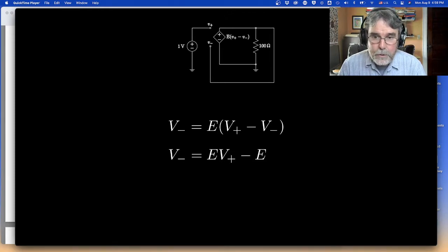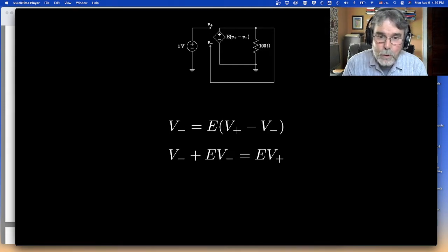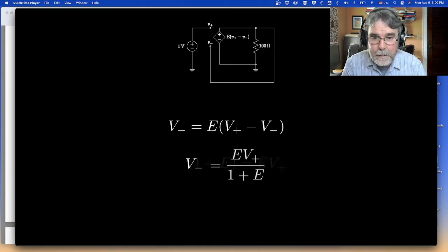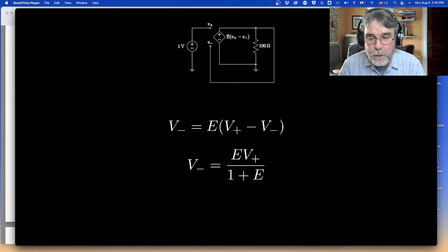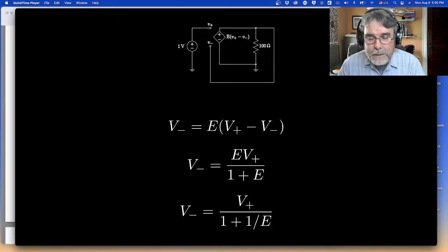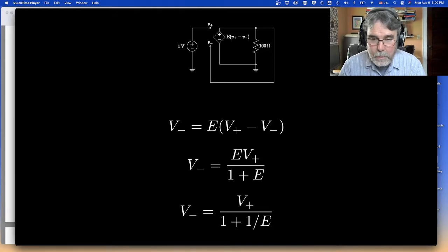Anyway, let's do the algebra. So we'll distribute the E. So now we get E times V plus minus E times V minus. Then the E times V minus moves over. We can factor out the V minus here. And then we get E times V plus over one plus E. That's the idea. Now you'll notice that I can simplify this by dividing by E on the top and the bottom. And that gives me this expression. And then since E is going to be a big number, I'll do a demo here in a minute with E equal to 100 so you can see how it works.